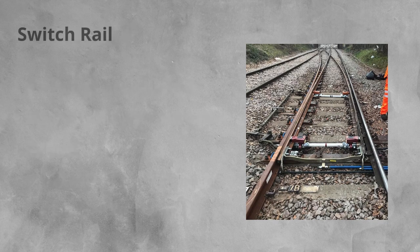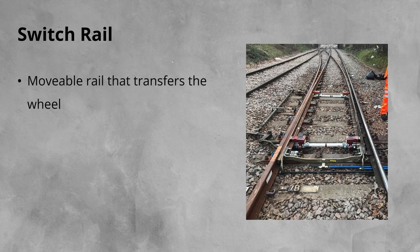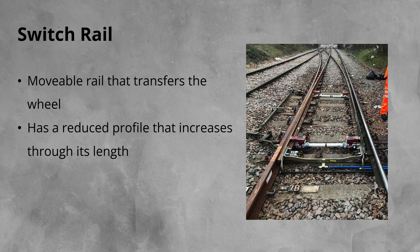Next up, the switch rail. The switch rail is the part of the half set that moves. It is on the switch rail that the wheel transfers between the two rails. To allow this to happen, the switch rail has a reduced profile at the start that gradually increases through its length until it reaches a full rail section. The inspection and maintenance of the switch rail profile is a critical maintenance activity to avoid trains derailing.